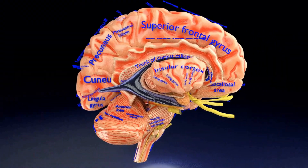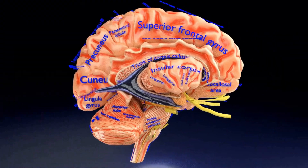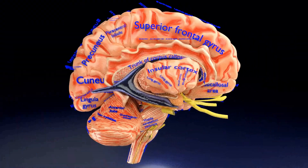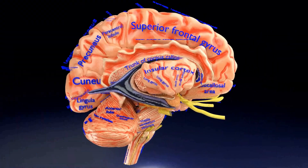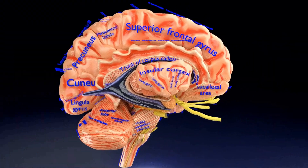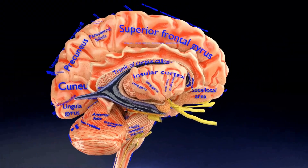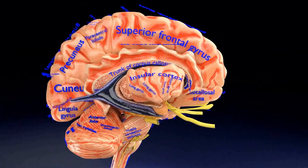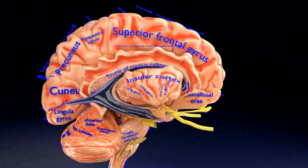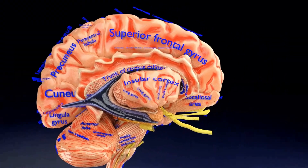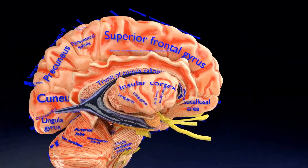The other structures deeper to the cerebral cortex include the hidden insular cortex, the cerebral ventricles, the thalamus, the limbic system, and the basal ganglia. On focusing onto the medial surface of the cerebral cortical hemispheres, you can see in order from front to back the subcallosal area.